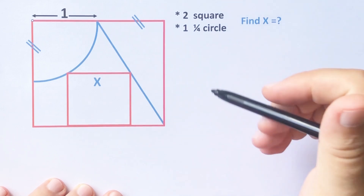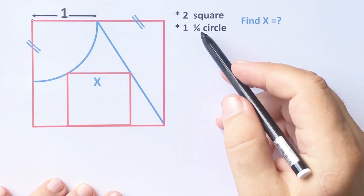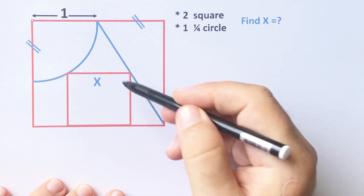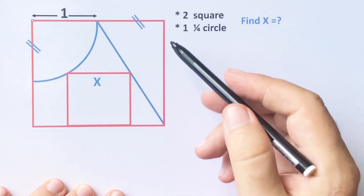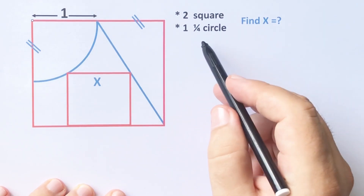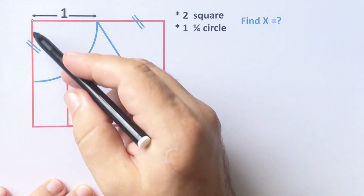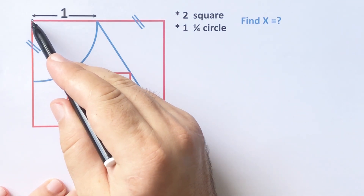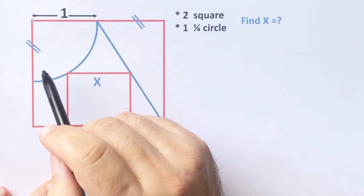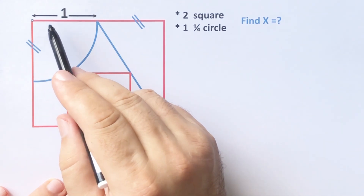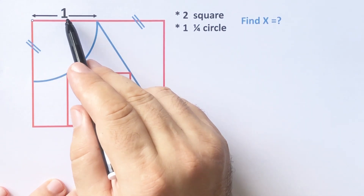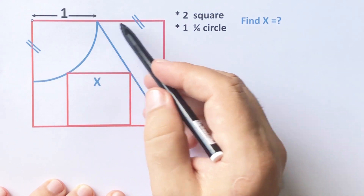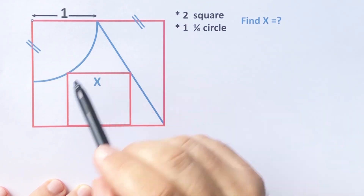In this video we have two squares, first one and second one, and then we have one quarter circle. This point is the center of the quarter circle, and the radius of this quarter circle equals one unit. These two parts are equal.